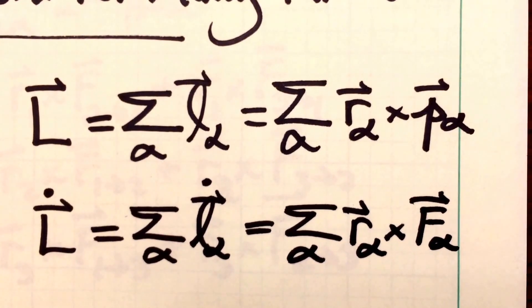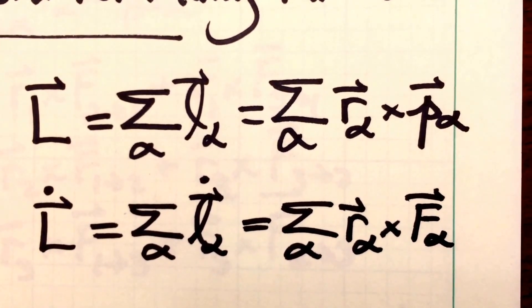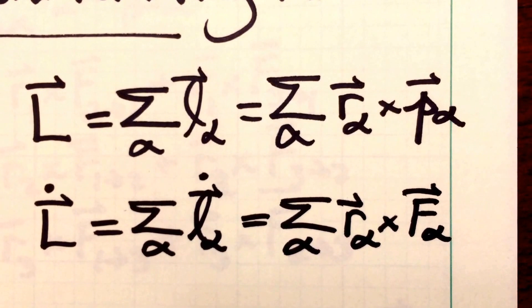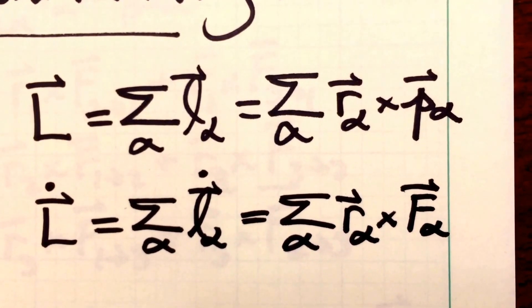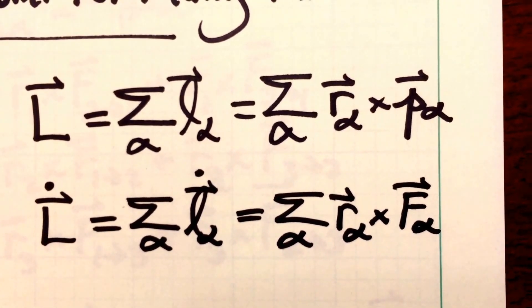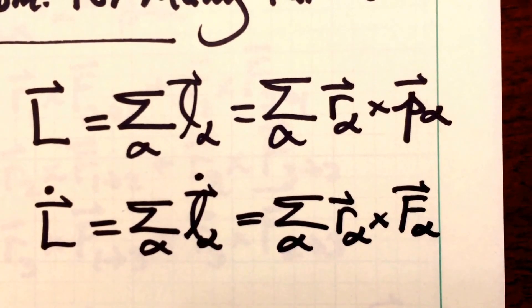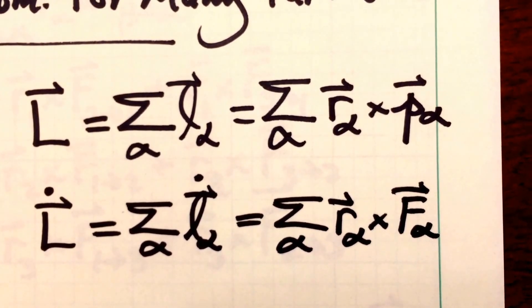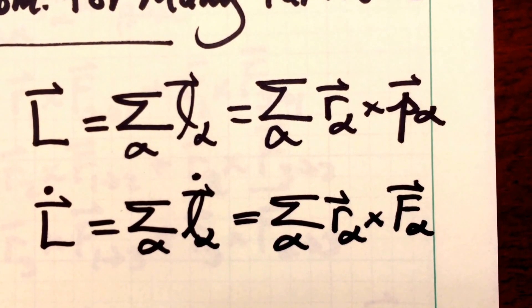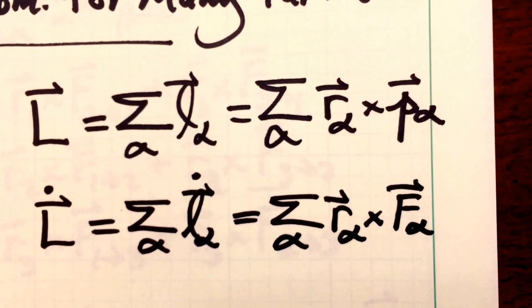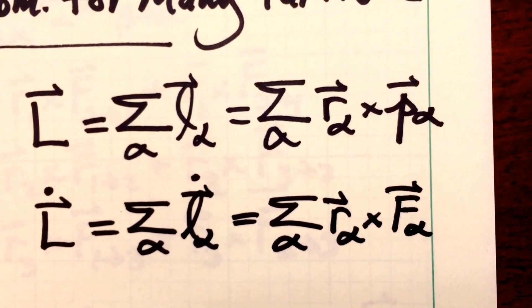We can then calculate the angular momentum for the whole system by summing up the angular momentum for each individual particle alpha, that's shown on the top line. And then we can calculate the change in the system's angular momentum vector, L dot, as the sum over the change in each particle's angular momentum.